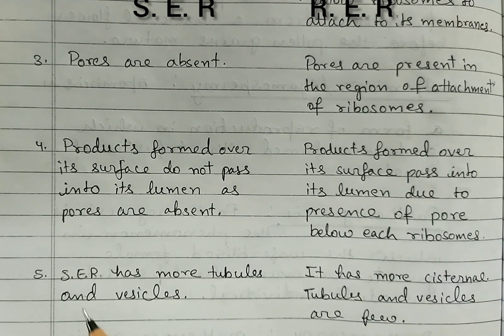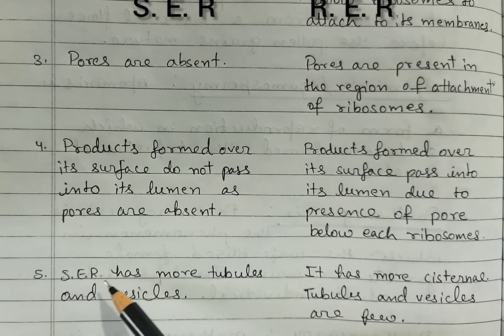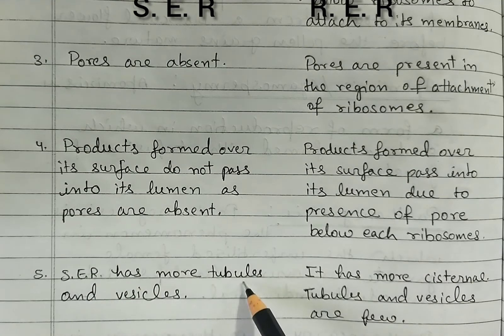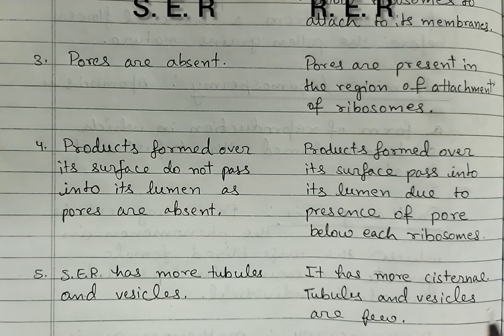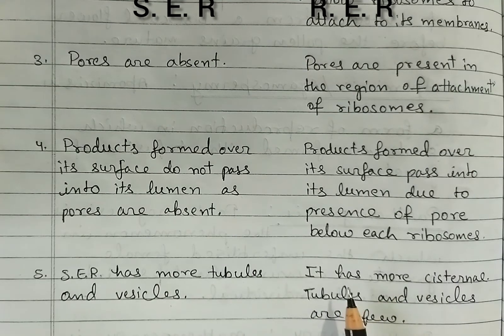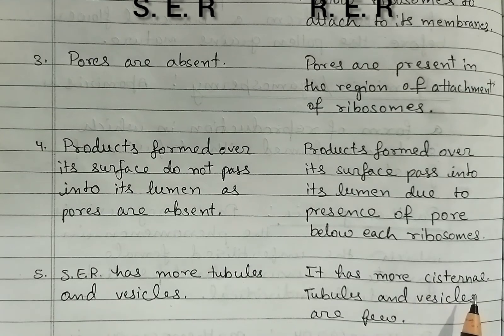Fifth difference — smooth endoplasmic reticulum has more tubules and vesicles. In rough, it has more cisternae; tubules and vesicles are few.